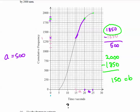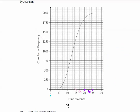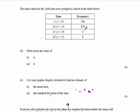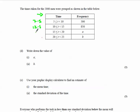Let's put those values back in the table: A is 500 and B is 150. Now, to find the mean and standard deviation using a calculator, we need the midpoints of each interval since this is grouped data. The midpoints are 7.5, 12.5, 17.5, and 22.5.